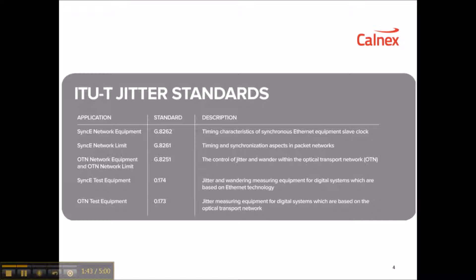The network equipment standard for SyncE network equipment is G8262. The network limits for SyncE are detailed in G8261, and the test equipment standard for SyncE is covered by O.174. G8251 covers both the network equipment and the network limits for OTN, and O.173 details the OTN test equipment accuracy.